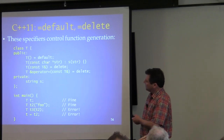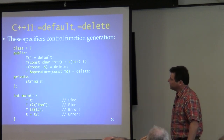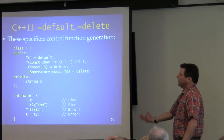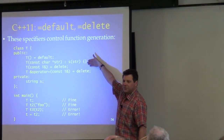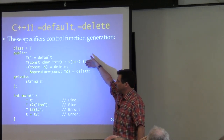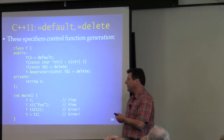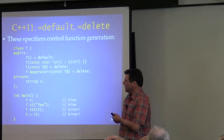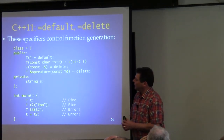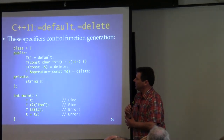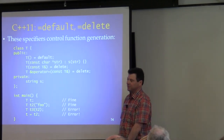You can also explicitly specify using `= default`, meaning the one the compiler would generate if you didn't declare it. That's useful because just omitting it means the compiler generates it for you — if you don't have another constructor. But how would you get the default constructor generated if you already have another constructor? You'd have to write it. So it's more self-documenting to say `= default`.